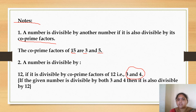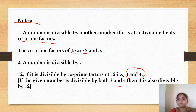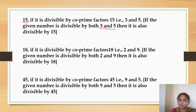That is why the given number must be divisible by both 3 and 4. Divisibility rule for 15: if a number is divisible by the co-prime factors of 15, that is 3 and 5, then it is also divisible by 15. For 3, add all the digits and check whether the result is divisible by 3. For 5, the unit's place must be 0 or 5.